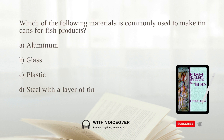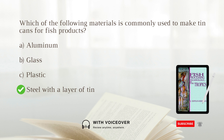Which of the following materials is commonly used to make tin cans for fish products? A. Aluminum. B. Glass. C. Plastic. D. Steel with a layer of tin. Answer: D. Steel with a layer of tin. Tin cans, particularly tin-plated steel cans, are widely used containers for fish products due to their resistance to chemical attacks and corrosion protection provided by the tin layer.